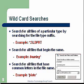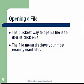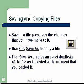Opening a file — the quickest way to open a file is to double-click on it. The file menu displays your most frequently or recently used files. Saving a file preserves the changes you have made to it. Use File, Save As to copy a file — it creates an exact duplicate of the file as it existed at the moment you copied it.